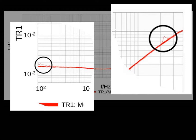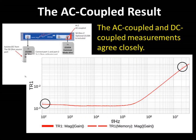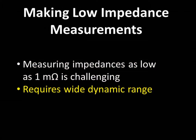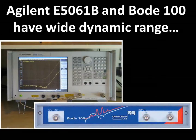Just one final note on the AC-coupled measurements: we found that when the same measurement was taken with the DC-coupled setup, there was very close agreement between the AC-coupled and DC-coupled results. To measure impedances as low as 1 milliohm requires wide dynamic range. The Bode 100 and Agilent E5061B analyzers are impressive in this regard, with both instruments providing approximately 125 to 130 dB dynamic range.